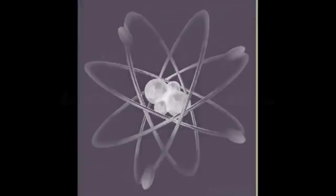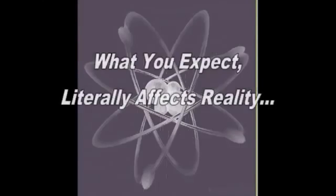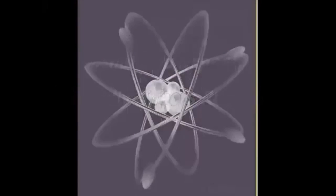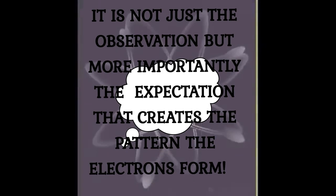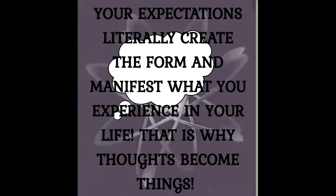The double slit experiment shows us that it's not just the observation that manifests the electron. It's the expectation that the observer holds. Through your observation, and more importantly, your expectations, you are creating the form matter takes. You are creating your reality every day through your observation. It's how the universe operates. And you couldn't stop it if you tried.